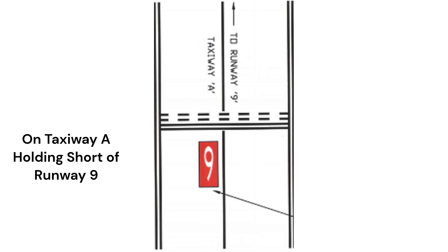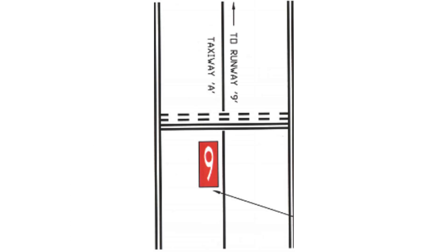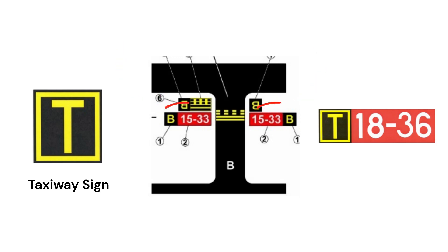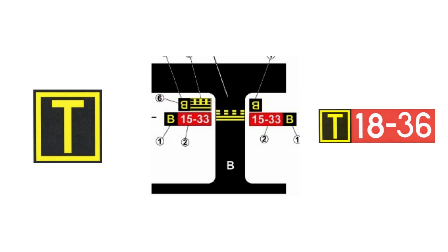This is a question that may be found on the private pilot written exam. A yellow letter on a black background indicates a taxiway as shown. A yellow letter on a black background that is next to the runway holding sign indicates that a pilot is on a taxiway and needs to hold short of the runway until receiving ATC clearance.